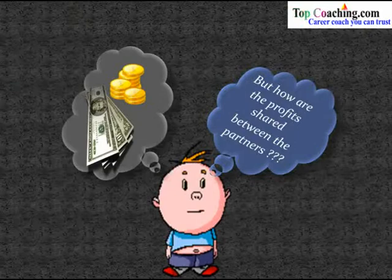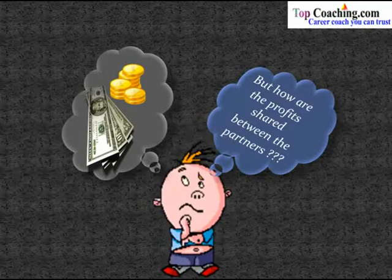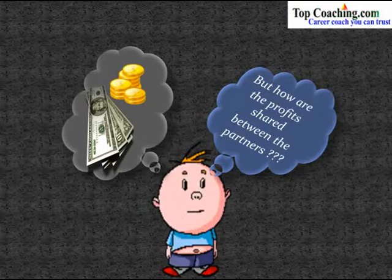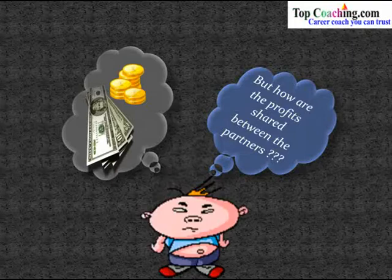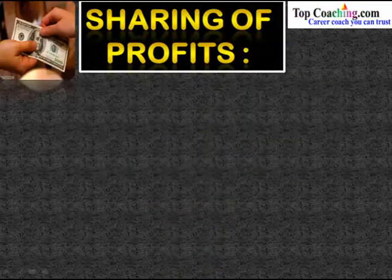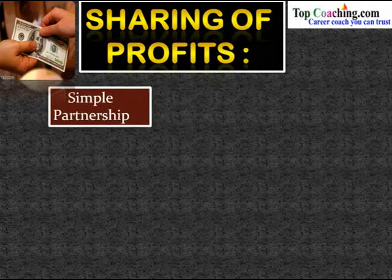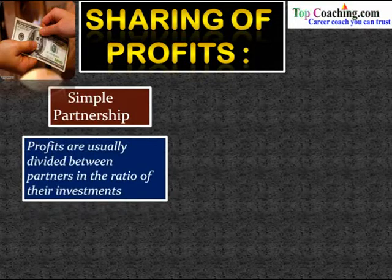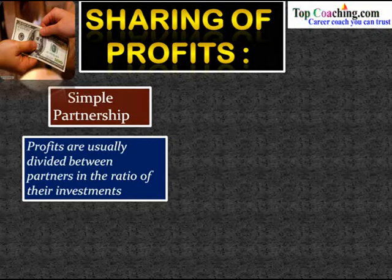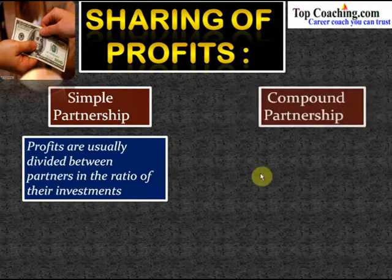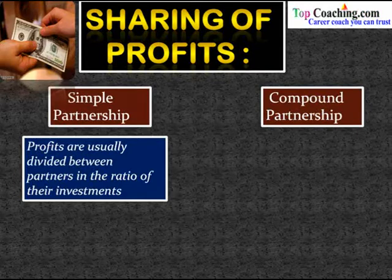Now, how are the profits shared between partners? In a simple partnership, the profits are divided between the partners in the ratio of their investment. Simple partnership is one in which the time period of investment is the same for all partners, so profits are shared simply in the ratio of amounts invested. If a partner invests more, they get a greater share of the profits.